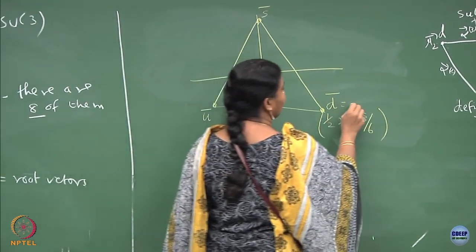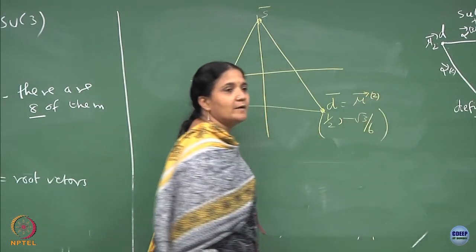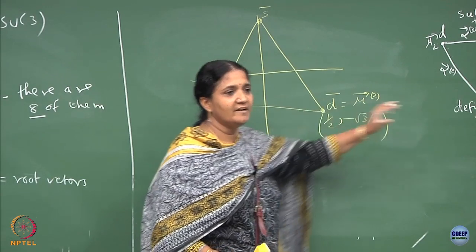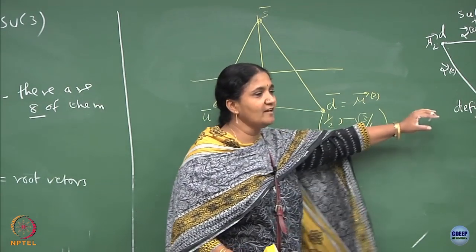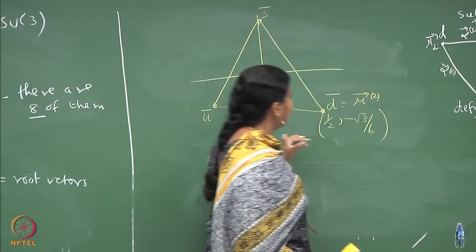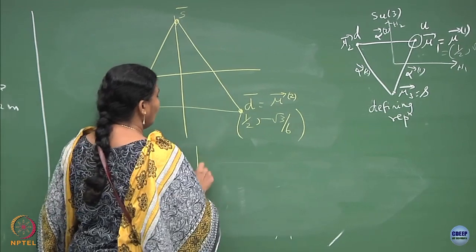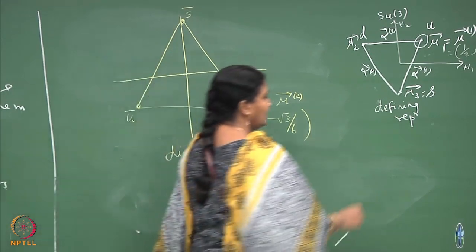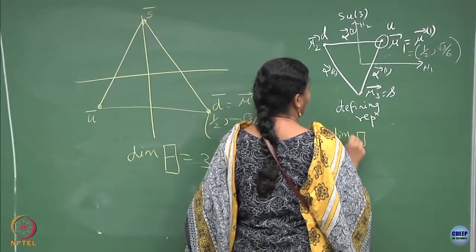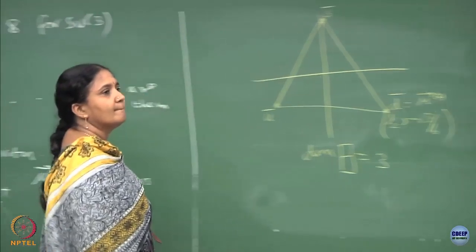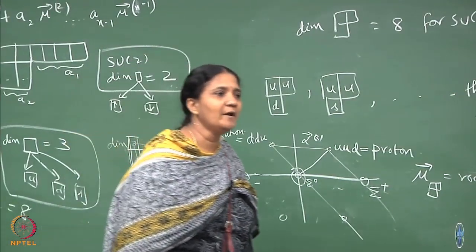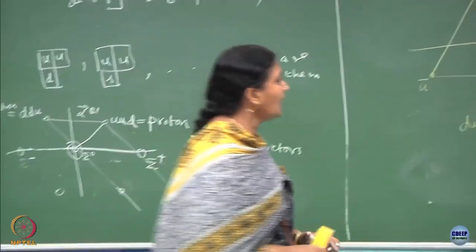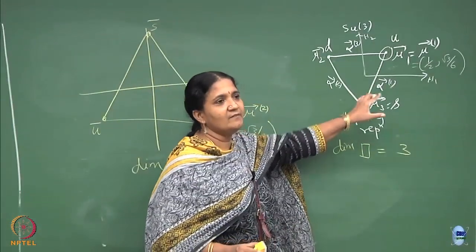The highest weight here, which I will call μ₂, will be the fundamental weight. These two are the only ones and both are three-dimensional. Interestingly, for SU(3) this representation is three-dimensional and this one is also three-dimensional, and I am going to denote it by this diagram. The dimension of this diagram is 3, and these two are the fundamental diagrams.